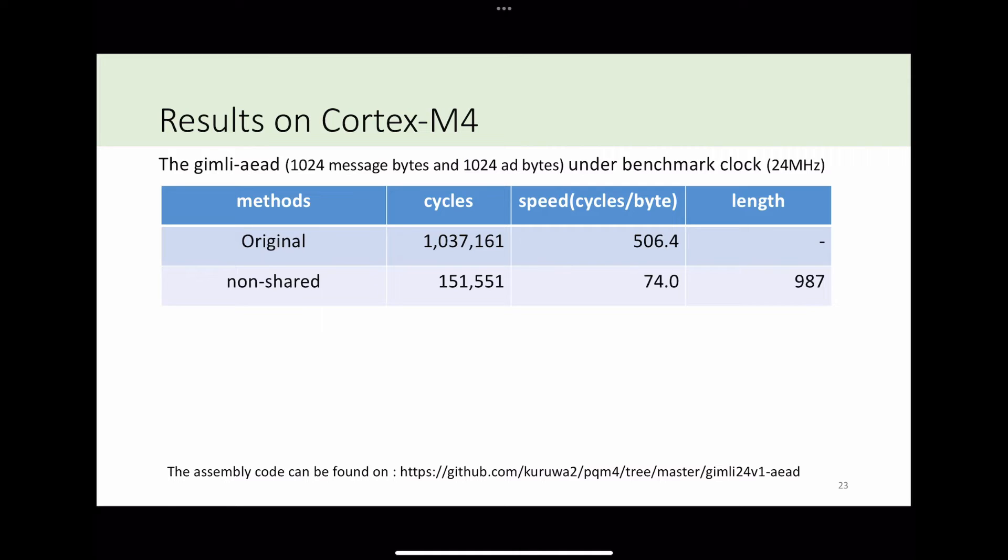Since the reference code is implemented with C language, it costs about 500 cycles per byte. We rewrote the Gimli with assembly language on Cortex-M4. Due to our optimization, Gimli has high performance on our assembly code. It costs only 74 cycles per byte.